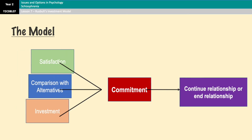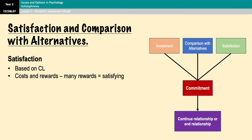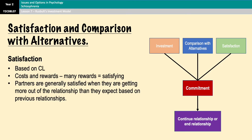Satisfaction is based on the concept of the comparison level, so it's judged by comparing rewards and costs. A satisfying relationship is one where there are many rewards — for example, support, fun, companionship, sex — and very few costs, such as conflict, anxiety, and compromise. Partners are generally satisfied in a relationship if they're getting more out of it than they expect to, based on previous relationships and social norms.